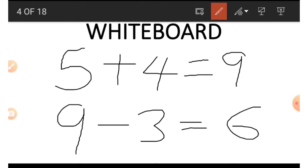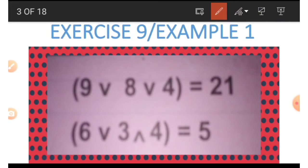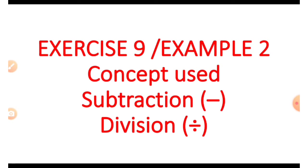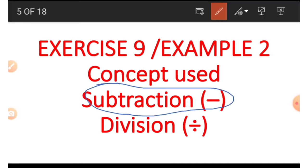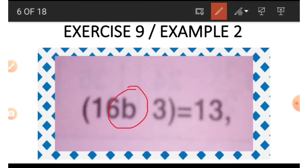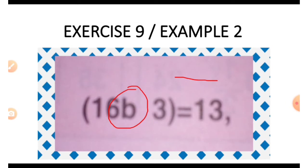We have found all the numbers in example 2. Now let's move to example 2, which uses the concept of subtraction and the concept of division. The first example here has the letter B. When you look at 16 and 3 to get 13, what comes to mind is a minus — so B means minus.